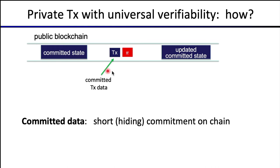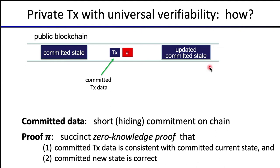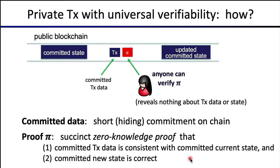When a transaction gets posted, we post only a hiding commitment to the transaction data, and then a hiding commitment to the updated blockchain state. The question is: if everything is committed and nothing is visible, how do we verify this is a valid transaction? This is exactly the role of a succinct zero-knowledge proof pi — a very short proof that's fast to verify. This proof proves that the committed transaction data is consistent with the committed current state; in other words, the committed transaction is valid, and the updated committed state is a correct result of applying the transaction to the old committed state.